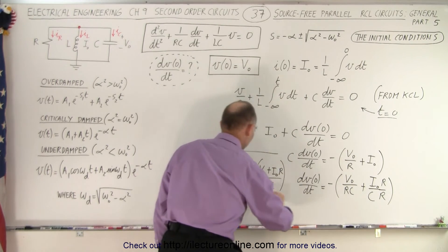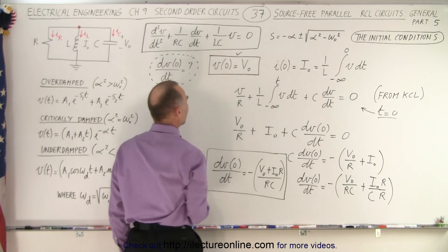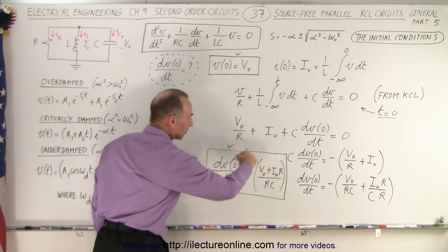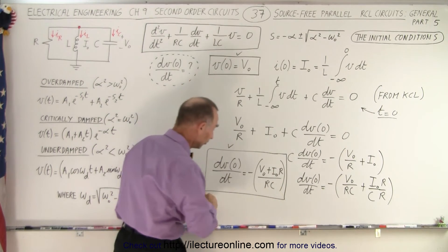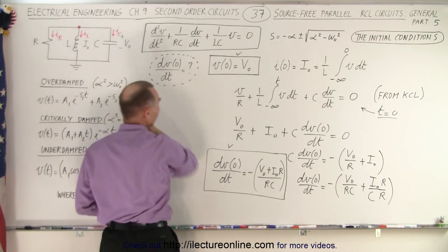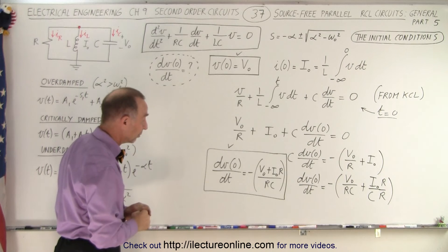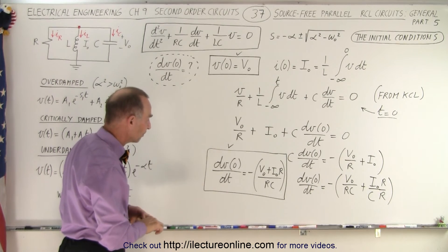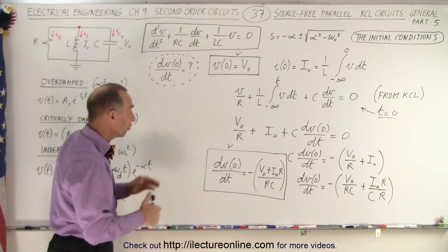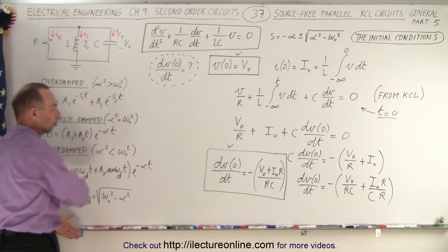And there we have the other initial condition in the general format equation. That gives us the initial voltage when time equals zero and the initial rate of change of the voltage with respect to time when time equals zero. That includes the initial voltage across the capacitor and the initial current through the inductor times resistance, divided by RC — essentially the time constant associated with the capacitor and resistor. Now we have the two equations that allow us to find the initial conditions, which we can then use to solve for A1 and A2 in the three possible solutions.